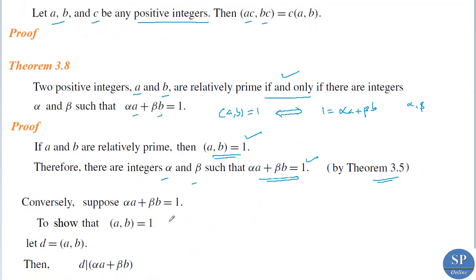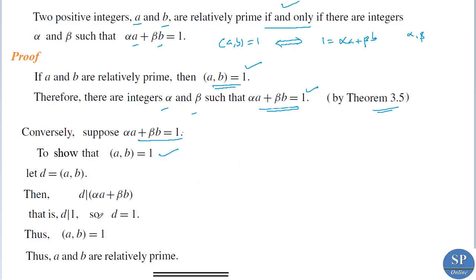Conversely, suppose that alpha·a plus beta·b equals 1. We have to show that a and b are relatively prime, that is, GCD(a, b) equals 1. Let d equal GCD(a, b); we need to prove that d equals 1.